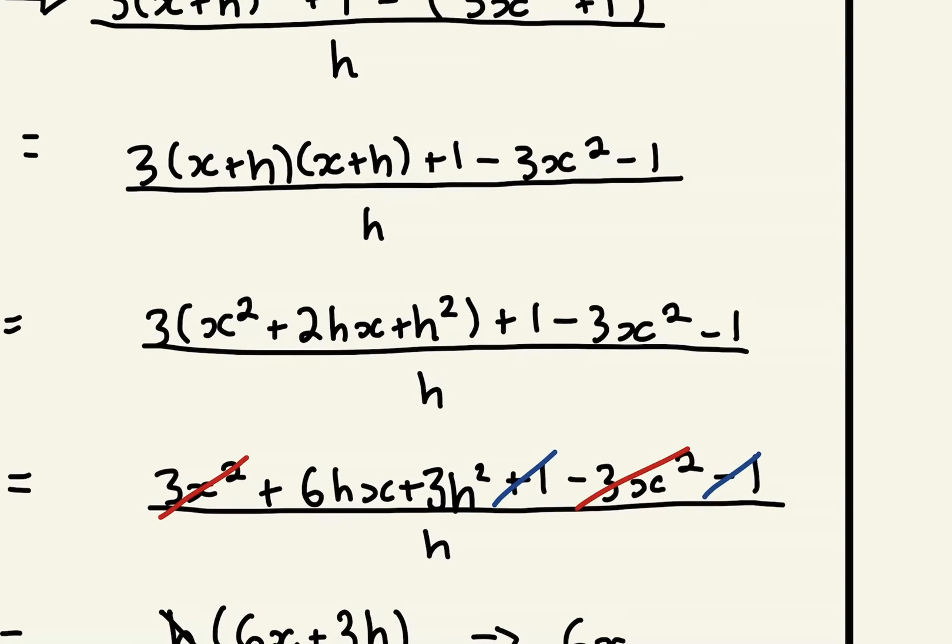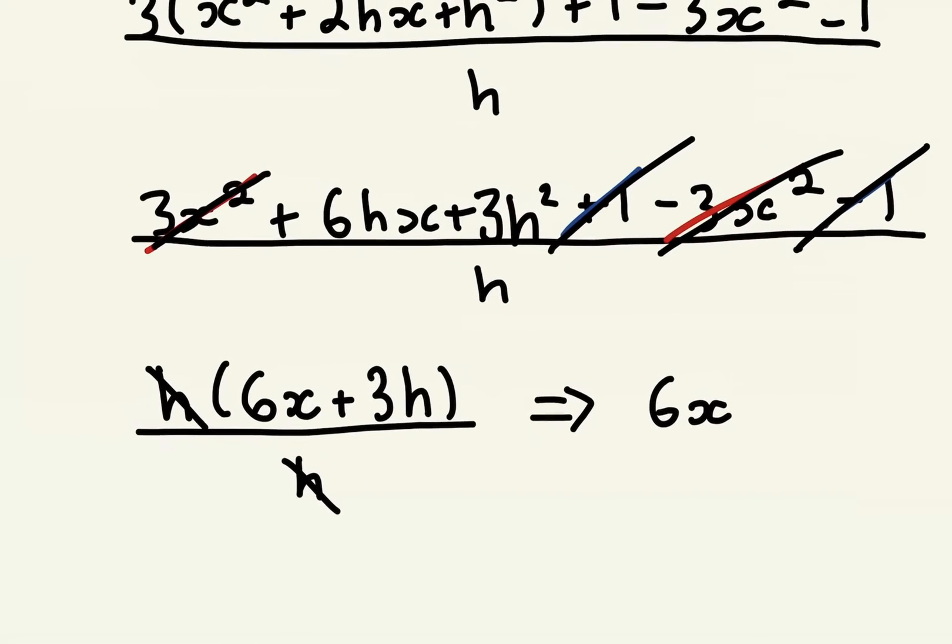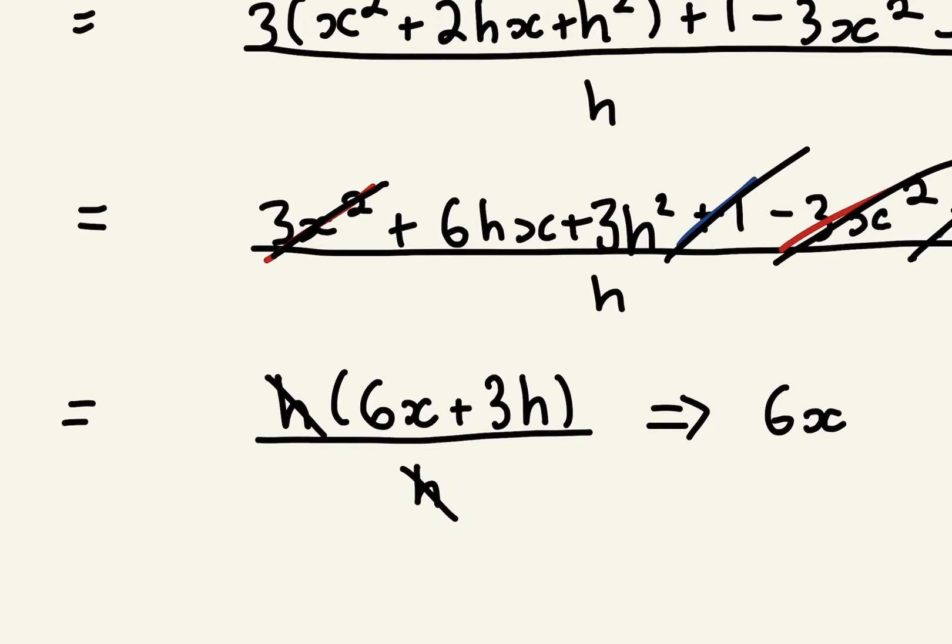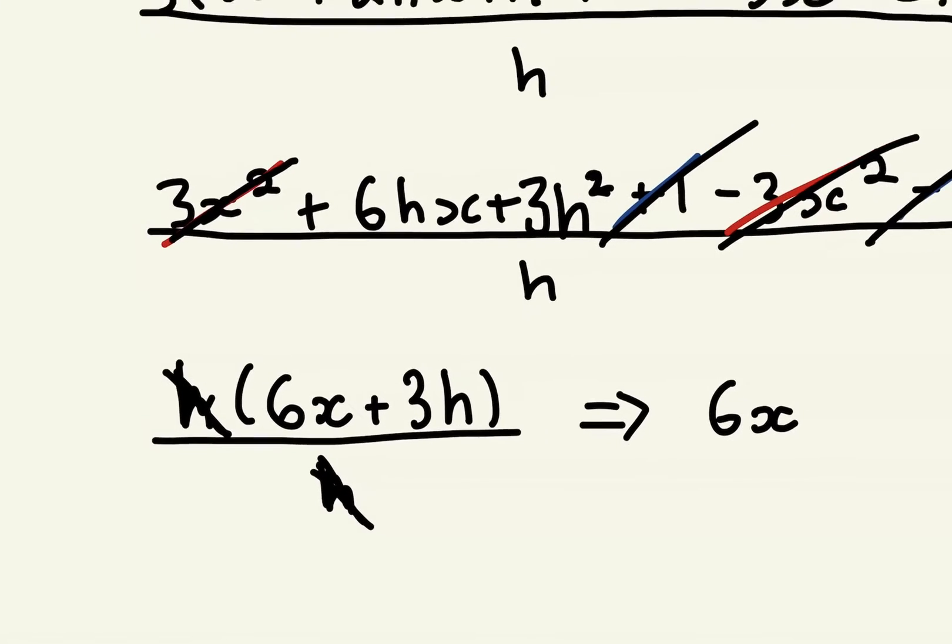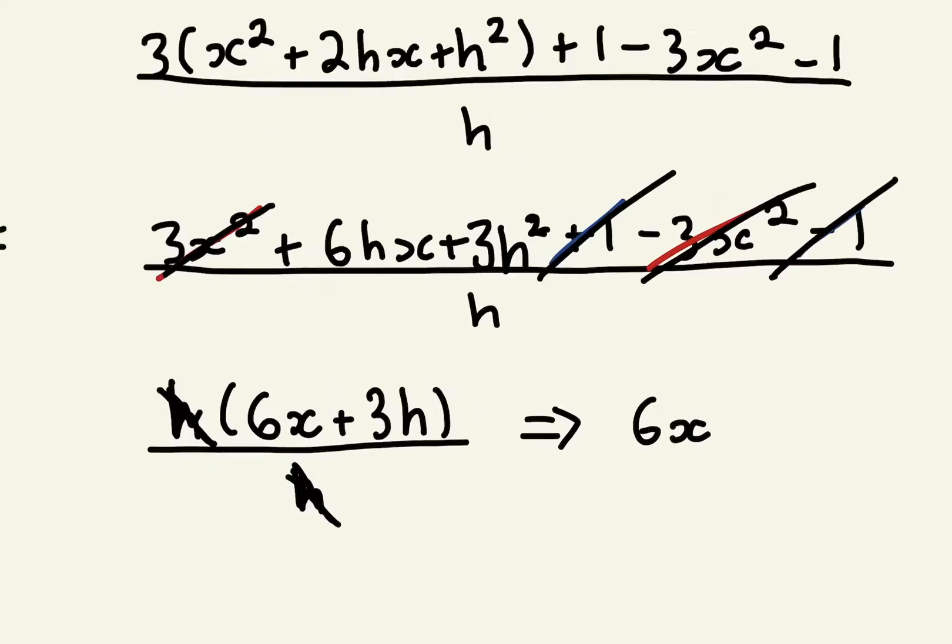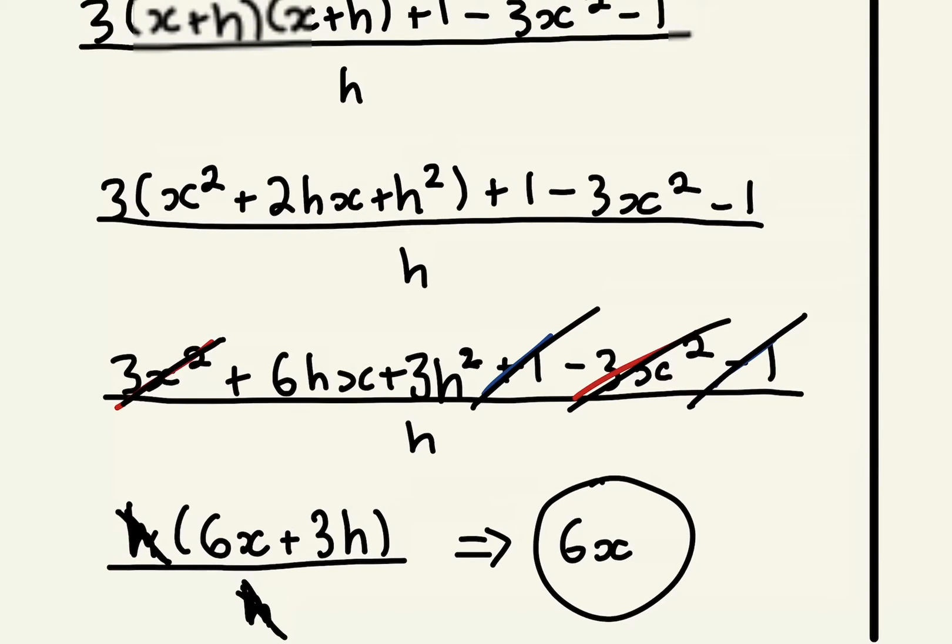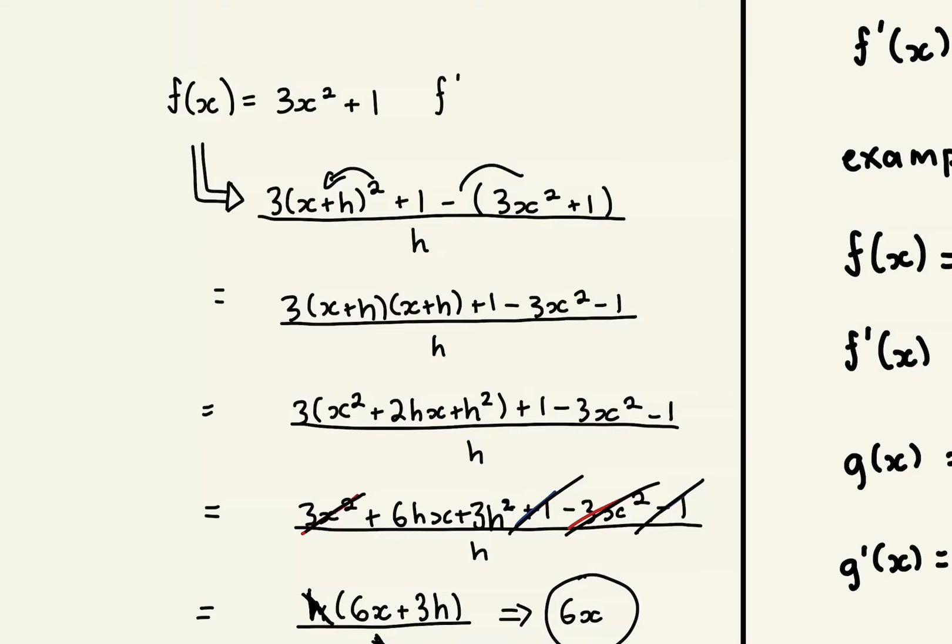Then you can cross it out, so 3x² crosses out with 3x², plus 1 crosses out with minus 1, and you're left with 6xh + 3h². You can pull out an h, cancel, and you're left with 6x + 3h. Since h is approaching zero, you're left with 6x, so 6x would be f'(x).